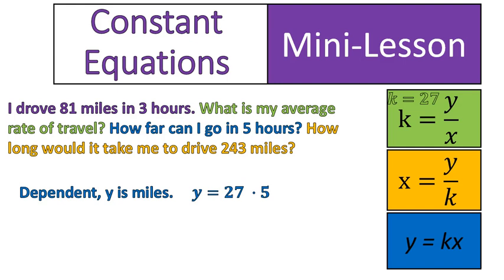My dependent variable is miles. And I use this equation, y is equal to my constant value times the number of hours that I'm driving. 27 times 5 gives me 135. That's how far I can go in 5 hours. I'm driving the constant rate of 27 miles per hour. We multiply that times 5 hours, and we get 135 miles. That's going to go right in there.